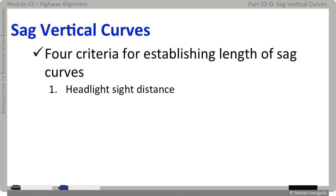Why headlight? Because at night, the portion of highway that is visible to the driver is dependent on the position of the headlights and the direction of the light beam. Why nighttime and not daytime? In daytime you can see far ahead and the visibility restriction occurs only at nighttime. Therefore, how far you can see in headlights is what determines the stopping distance on sag curves.